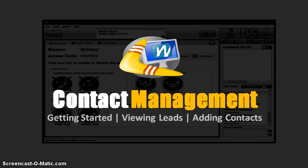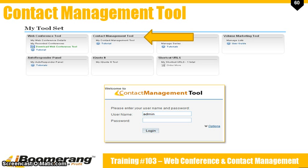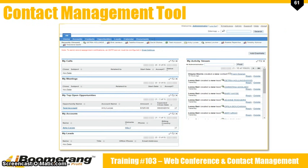Now let's go over the contact management tool. The contact management tool is an online database for you to store your clients' information. To log in simply go to your iBoomerang back office and under the my toolset area click on the contact management tool. You will then be prompted to log in — your user ID and password are what you use to log into the iBoomerang back office. After logging in you will be sent to the home page. The navigation is at the top in the blue bar. Below the navigation are your most recently viewed contacts, and the main section holds several dashlets or widgets.